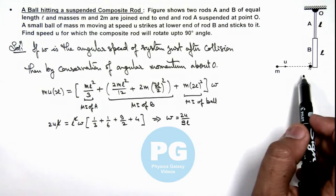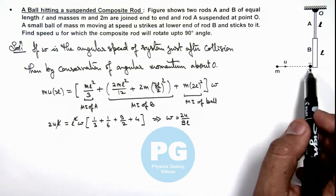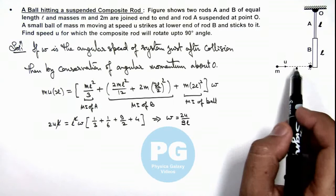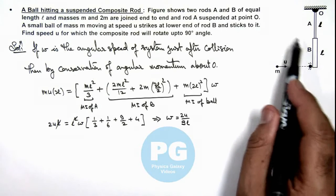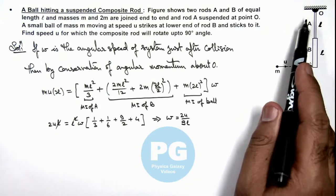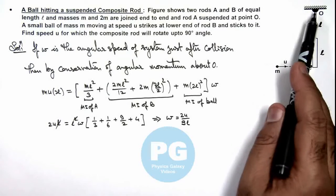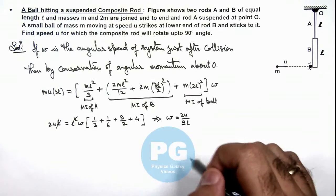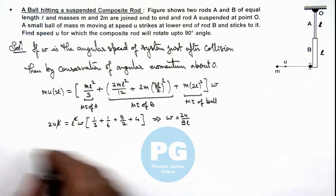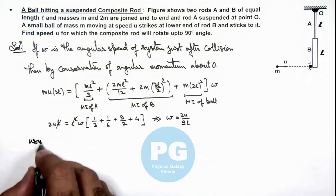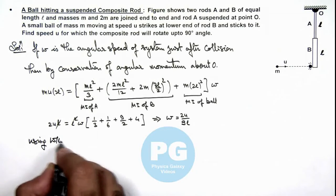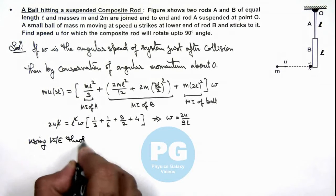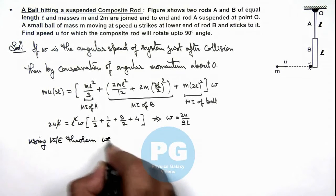We are given that the system must rotate by 90 degrees or the system should become horizontal in the plane passing through point O. Then we'll calculate the value of u in that case using work energy theorem.